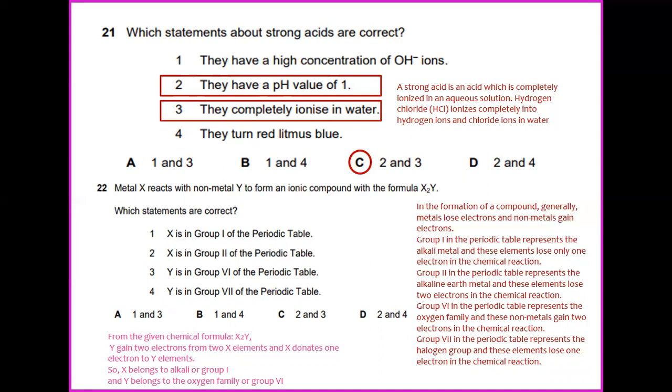Group 7 in the periodic table represents the halogen group and these elements gain 1 electron in the chemical reaction. From the given chemical formula X2Y, Y gains 2 electrons from 2 X elements and X donates 1 electron to Y element. So X belongs to alkali of group 1 and Y belongs to oxygen family of group 6 of the periodic table. So the answer will be 1 and 3.